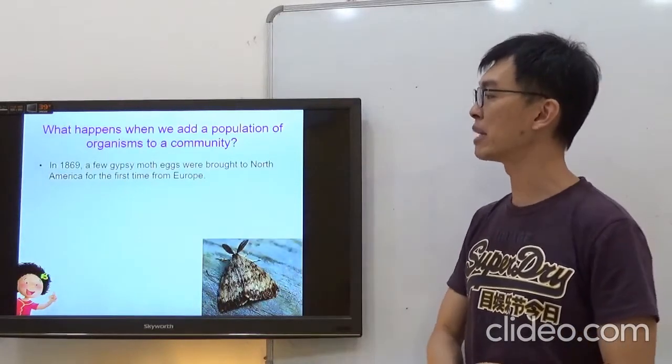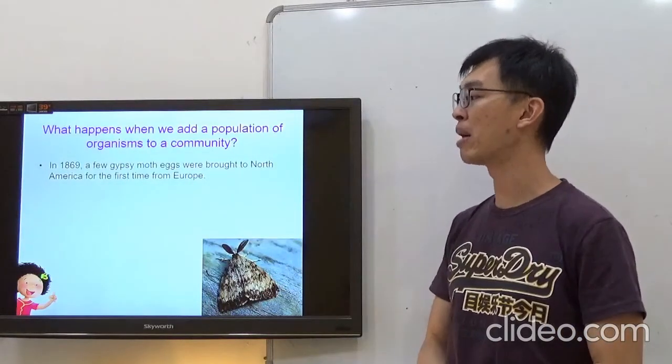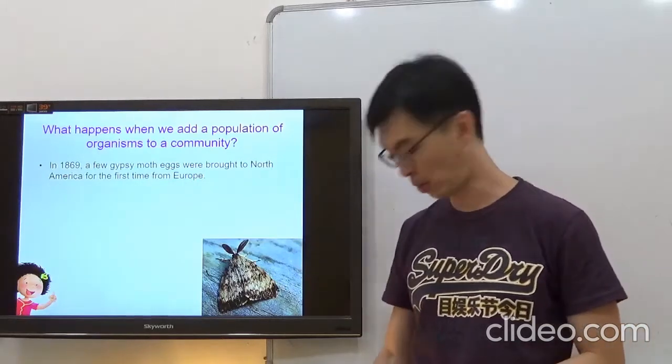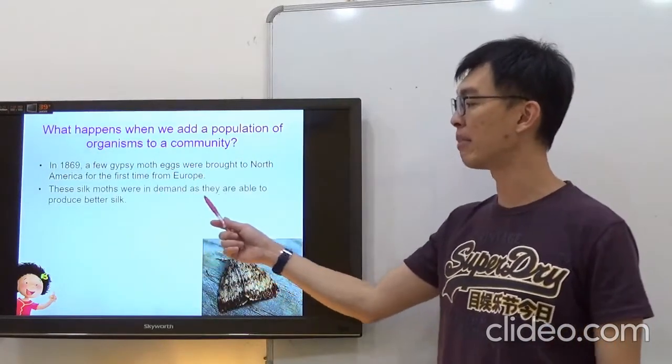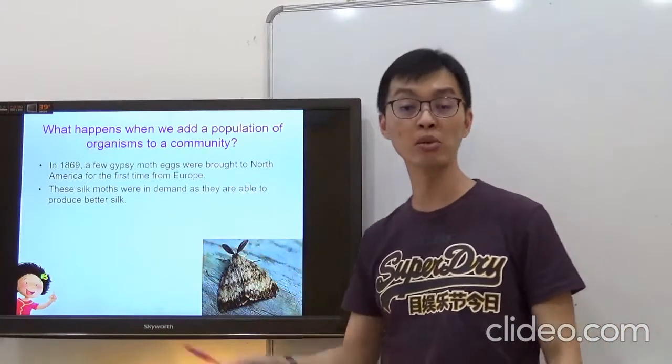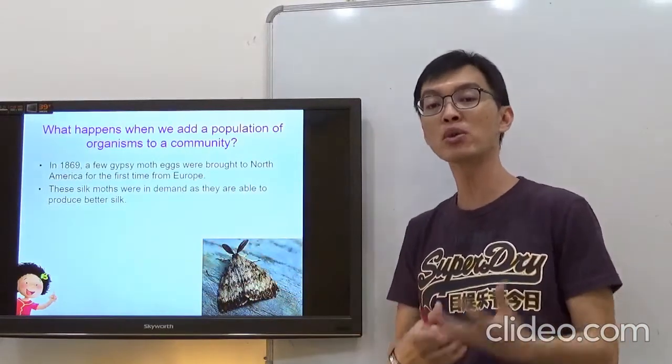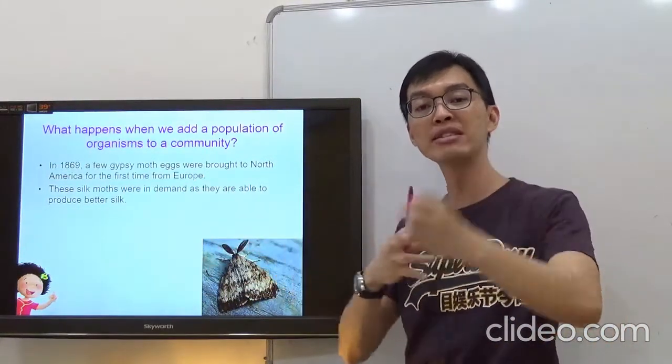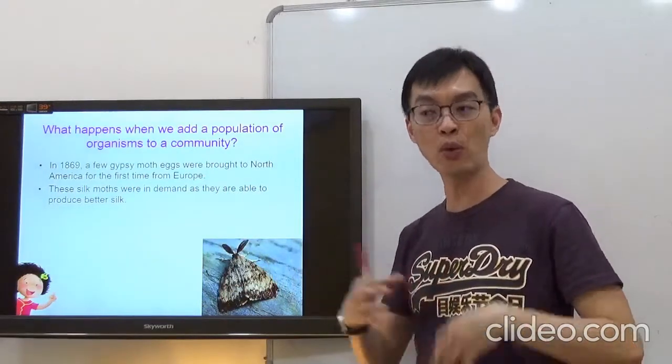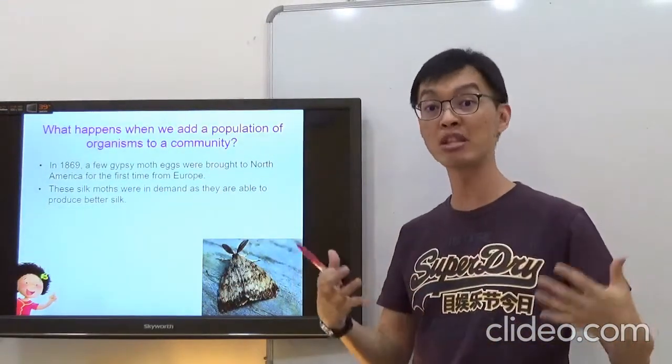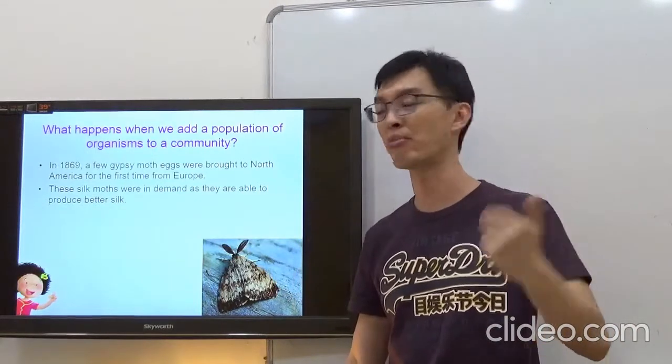In 1869, a few Gypsy moth eggs were brought to North America for the first time from Europe. These silk moths were in demand as they are able to produce better silk. So silk quality was good, so the US brought in this Gypsy moth because they want to make them reproduce and produce lots of silk for them. And then of course they can earn lots of money.